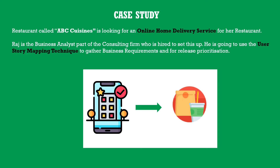As always, we will use a case study to drive the concepts. In this video series we're going to use the case study from ABC Cuisines, a fictional restaurant looking for an online home delivery service. Basically, they're looking for an online solution for customers to order food right from the comfort of their home. We had covered this as part of the user story mapping video — I'll provide a link. It talks about how Raj, the business analyst, used the story mapping technique to come up with the list of epics and user stories in the form of a story map.